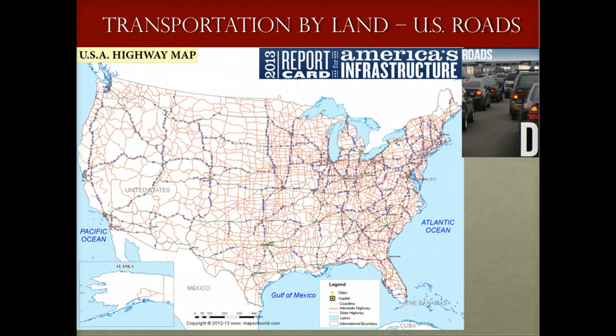The U.S. road network includes about 4.1 million miles of road, which is about 10% of the roads in the entire world. These roads are used by 312 million U.S. residents, 60 million visitors and tourists, and 7.4 million business establishments. The American Society of Civil Engineers gave the United States a D for the state of its roads in their 2013 report card for America's infrastructure. 42% of America's major urban highways are congested, costing the economy an estimated $101 billion in wasted time and fuel annually.